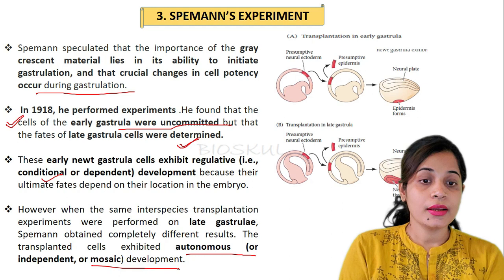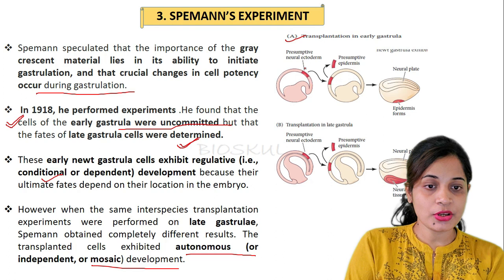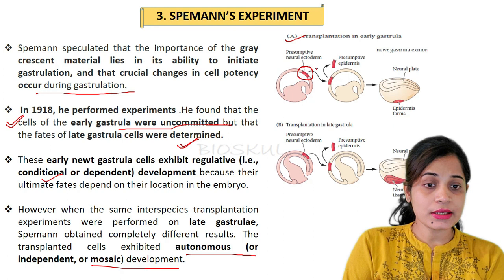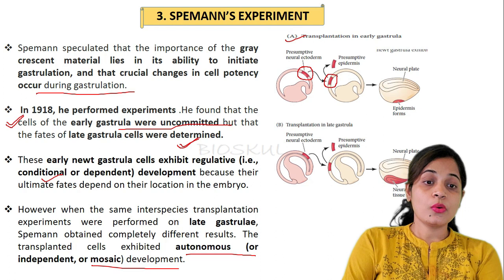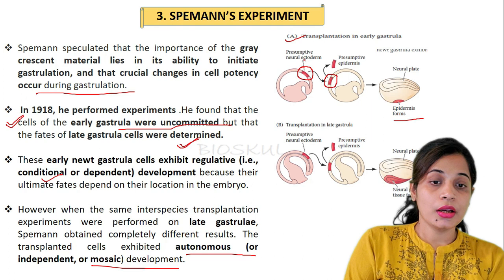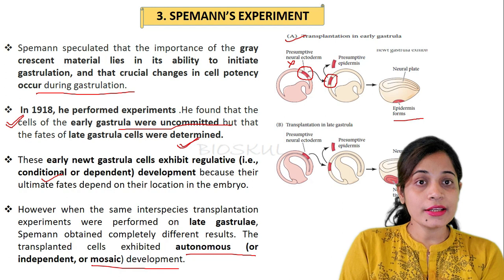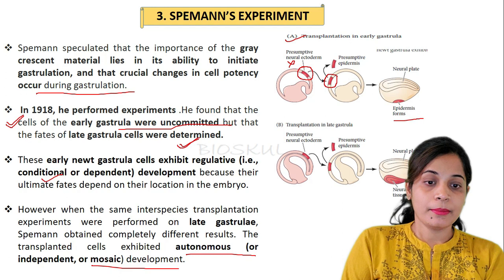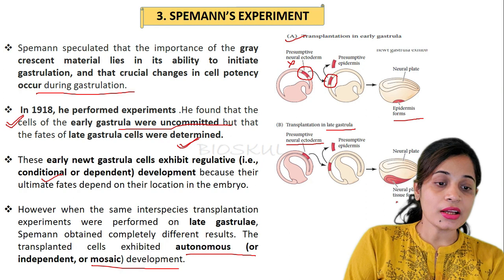In the diagram, in the early gastrula condition: prospective neural ectoderm is transplanted into the prospective epidermis region of the host. What develops? It forms epidermis instead of neural tissue, because the cell fate is determined by neighboring cells. This demonstrates that early gastrula development is conditional specification or regulative development. But in the late gastrula when the same experiment was conducted, the transplanted tissue forms neural tissue instead of epidermis.